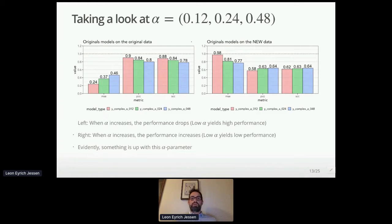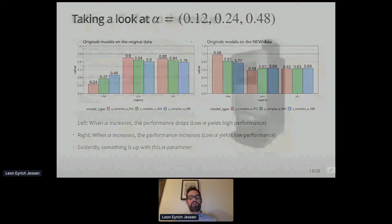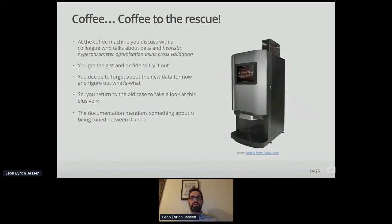Always go to coffee when in doubt. Take a break, talk with colleagues, and that's what you do. You go for coffee and talk with a colleague who mentions heuristic hyperparameter optimization using cross-validation. You get the gist of it and decide to try it out. Let's forget about the new data for now and work on the old data to get your understanding right. You return to the old case and look further into this elusive alpha. The documentation mentioned alpha being somewhere between 0 and 2—the interval they used to optimize alpha to 0.12.